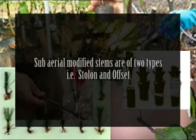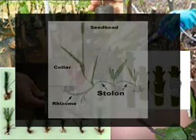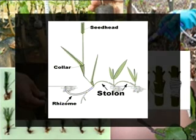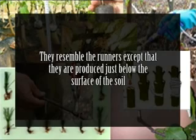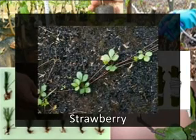Such plants propagate quickly with the help of fragments of special branches. Sub-aerial modified stems are of two types: stolon and offset. Stolons develop from underground stems, grow horizontally outwards, and bear nodes and internodes. Like the runner, they are produced just below the surface of the soil. Examples include strawberry and Vallisneria.